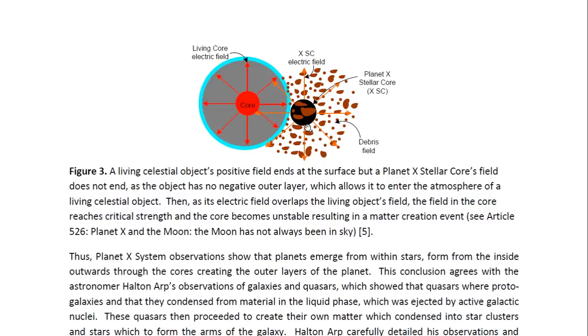Whilst this object doesn't have a negative outer layer, it doesn't have enough gravitational energy to produce it, to push electrons within its matter outwards to its outer layers. And its gravitational energy is so low that the outer layers of the planet broke apart and became this debris field.